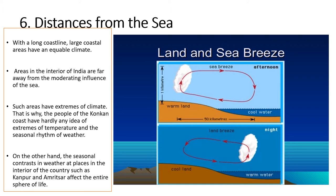The distance from the sea coast affects the climate of a place. First we will understand it in the form of land and sea breeze — how the sea and the sea coast affect the climate of coastal areas.